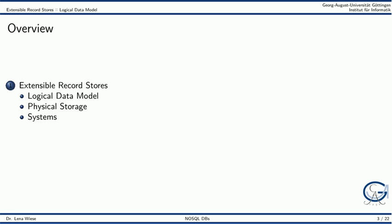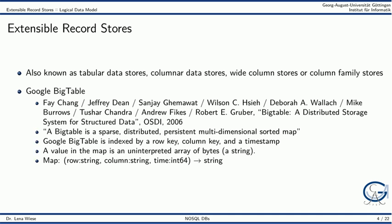Today we will look at so-called extensible record stores. Extensible record stores are also known as tabular data stores, columnar data stores, wide column stores or column family stores.